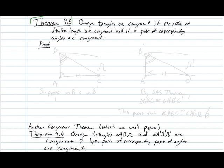So Theorem 9.5 says that omega triangles are congruent if the sides of finite length are congruent and if a pair of corresponding angles are congruent. So we have two omega triangles: A, B, omega, and another pair: A prime, B prime, omega prime.